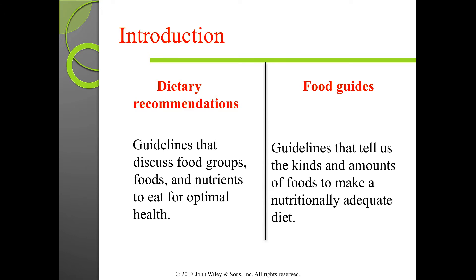From dietary recommendations, food guides are developed — guidelines that tell us the kinds and amounts of food to make a nutritionally adequate diet. The MyPlate is an example. The USDA's first nutrition guide was published in 1894, and in 1943 during World War II, the USDA introduced the Basic 7 food groups to help maintain nutritional standards under wartime food rationing.